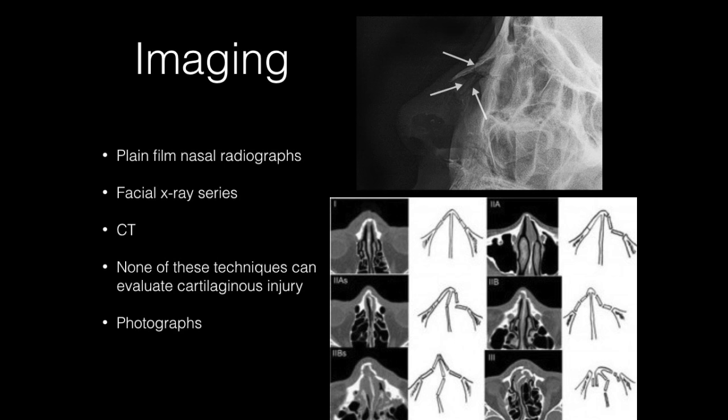A facial x-ray series should be ordered when other facial fractures are suspected. CT is also useful to assess for associated injuries as well as the extent of nasal injury, especially septal fractures. Photographs are useful and necessary for documentation and comparison with pre-injury photos. Photographs should include standard angles used in facial analysis: frontal, left and right lateral, left and right oblique, base view, and often a bird's eye view.